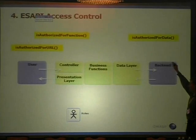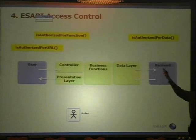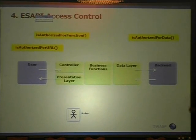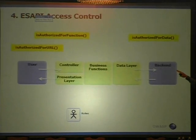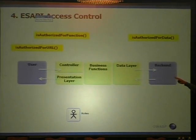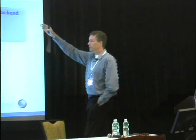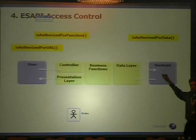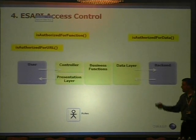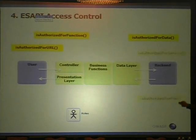Deeper in the application, you need an is-authorized-for-data call. So even if the user is authorized for the URL and the function, maybe they're not allowed to execute it with someone else's data. We need three different checks here. There are a few others as well — you can check if they're authorized for a service.